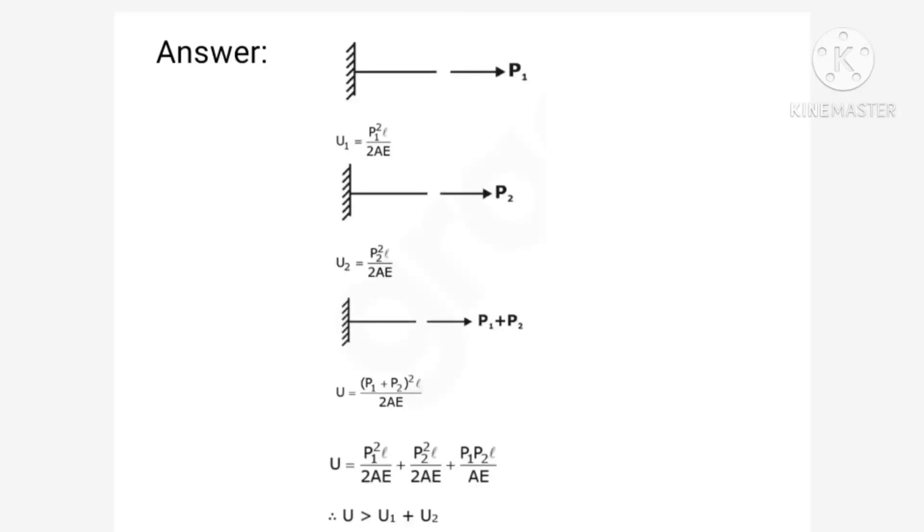So total strain energy will be equal to P1 square L upon 2AE plus P2 square L upon 2AE plus P1 P2 L upon 2AE. It is simplified formula for third case. And first and second cases they are separately there. So obviously for third case strain energy is more than strain energy of first plus second. So U is more than U1 plus U2. That is the correct option which is option A.